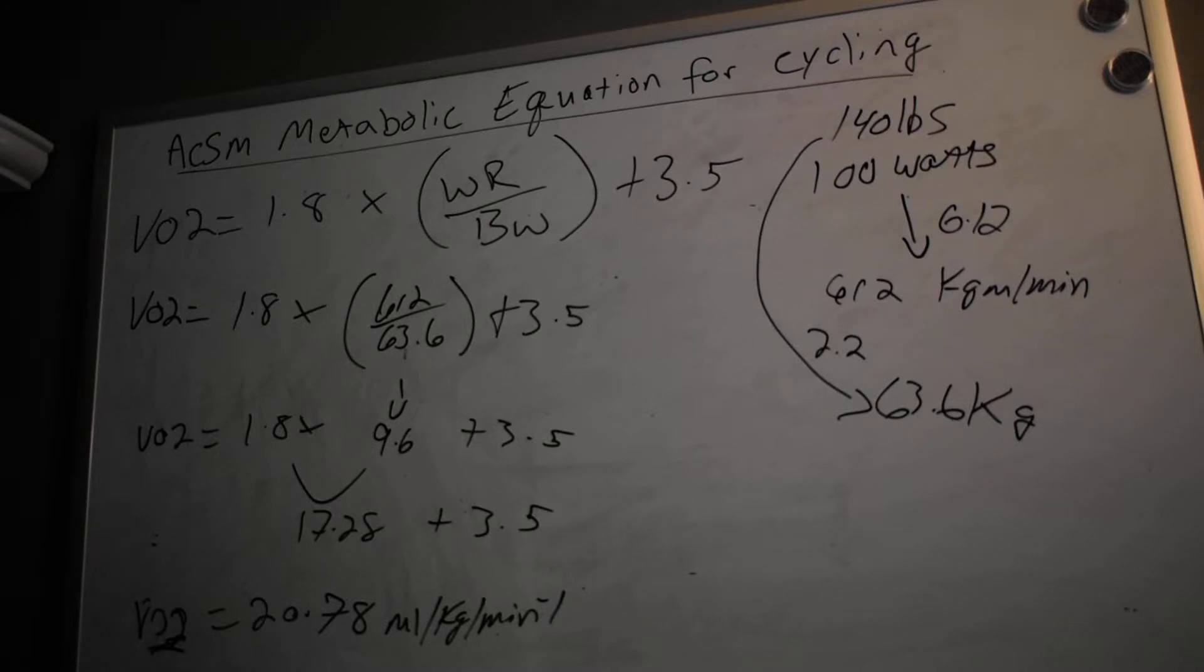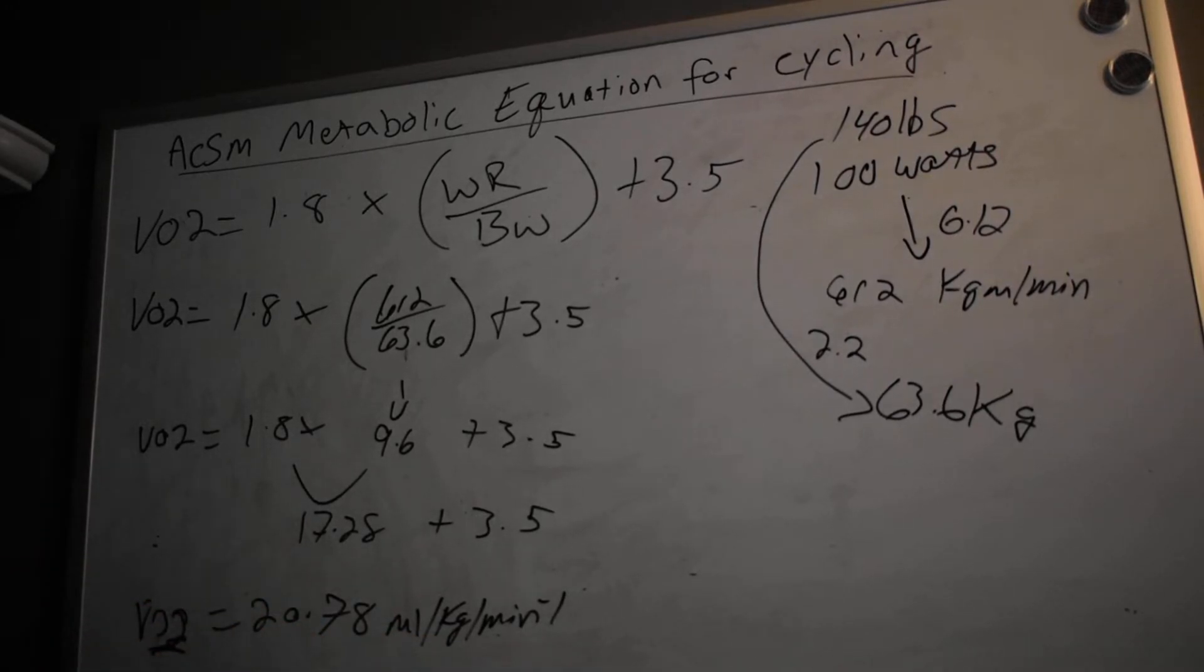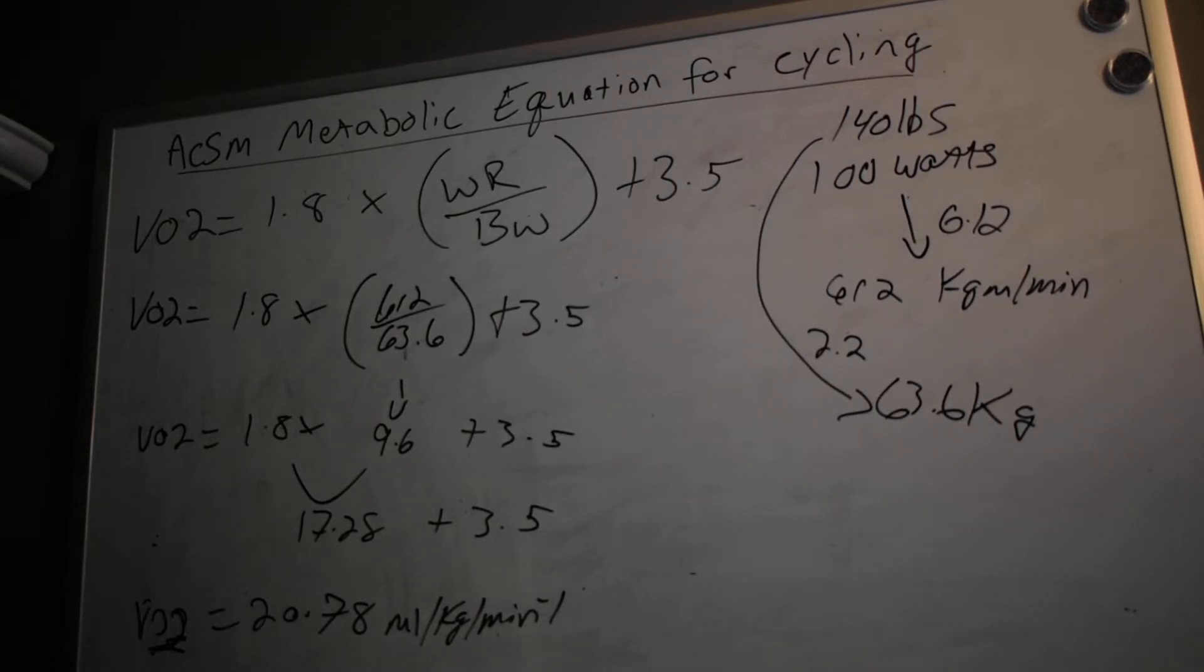You could take this example one step further because somebody might ask, what's the caloric expenditure per minute of a 140 pound individual exercising at 100 watts on the cycle? Well first, this is your first step—you have to find the relative VO2. Remember this 20.78 is a VO2 in relative terms. Then you would have to transform that or convert it into an absolute number. We did this last week too, but I want to do it again because it's very good practice.